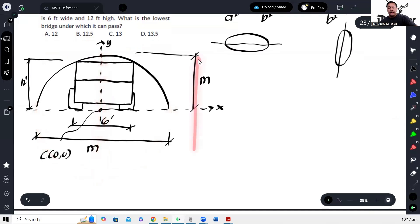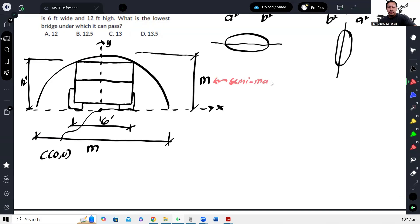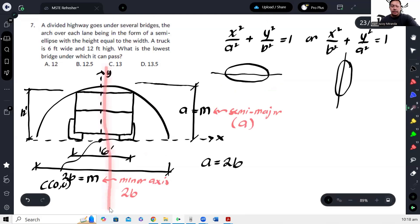Since these are equal, this is the major axis which comes out to 2M, and this is just M, so this is shorter and this is longer. Okay, so this is longer, meaning this is the major axis, or in other words, that is your semi-major. This is the semi-minor, this is the minor axis. Okay, so the semi-major is A. When you say minor axis, the whole axis is 2B. So this is A, and this is also A, and this is 2B. Since they're equal, therefore A equals 2B. We'll use this later. So since this is the major axis, this is our equation.